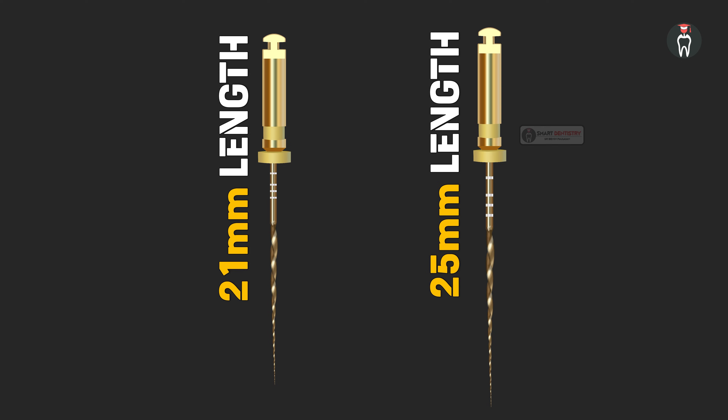Now let's consider the next important criterion. Is it going to be the same for a 21 millimeter length instrument and a 25 millimeter length instrument, where the tip size and taper are the same and only the length is different? The manufacturer recommends the same torque for both, with no difference. But in truth, a 25 millimeter file is more flexible compared to a 21 millimeter file. So the torque setting should be reduced for a 25 millimeter file, and the speed can be increased for a 25 millimeter length file, so that the chances of instrument separation will be minimized.